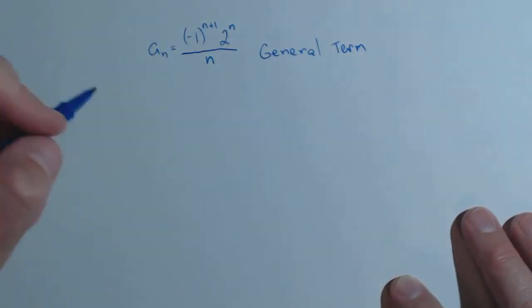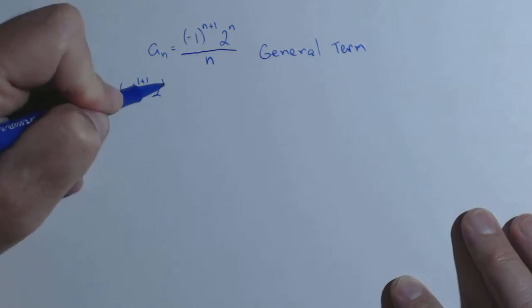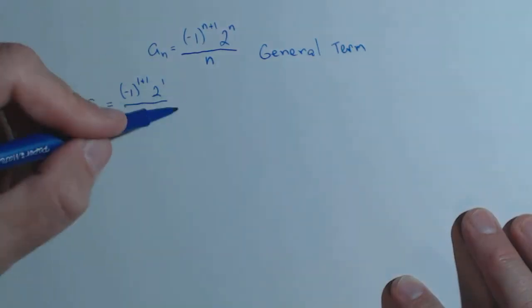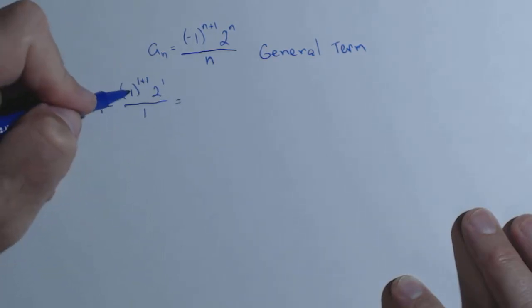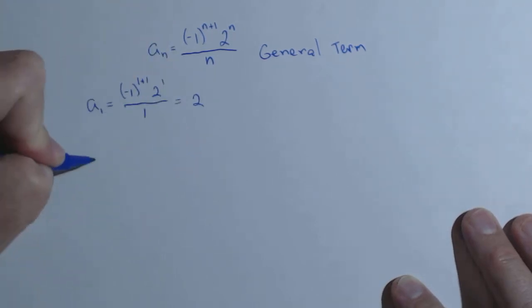Say we want the first term, that would be denoted a sub 1. Notice the one in for n. That'd be (-1)^(1+1) times 2^1 over 1. So all I did was plug in one for all my n's. I'll have negative one squared, so that becomes a positive one. Two to the one is two over one. Simplifies down to two.